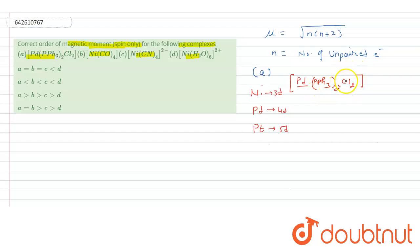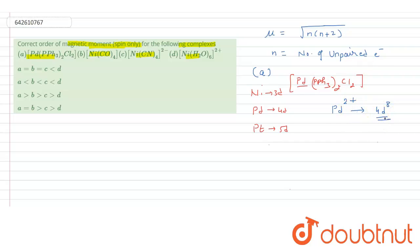In this complex, chlorine acts as a strong field ligand. Palladium is in a +2 oxidation state, so its electronic configuration is 4d8. Since it is a square planar complex, we use the square planar crystal field diagram to fill the electrons.